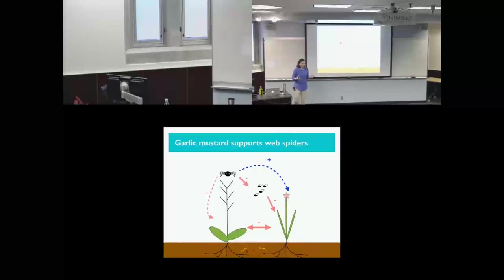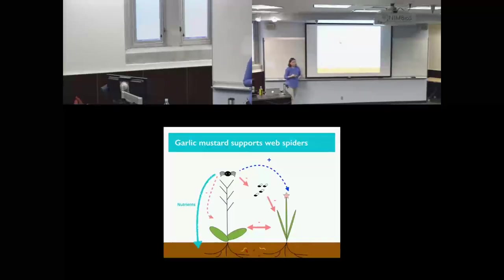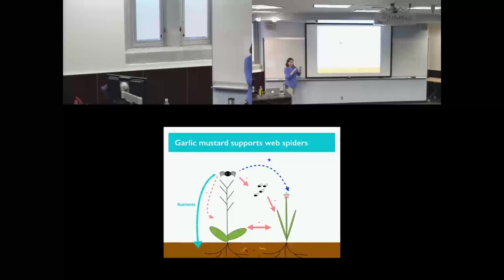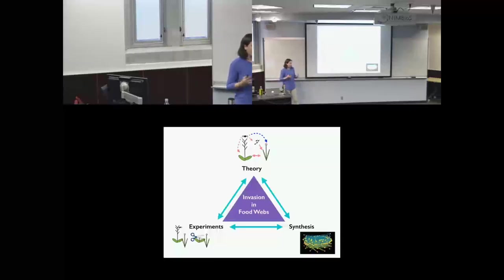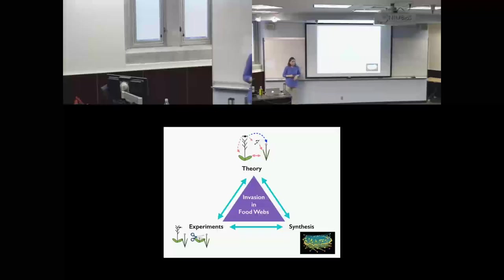We can broaden this to an ecosystem perspective and imagine these spiders at really high densities having an impact on nutrient availability — either by altering the plant community composition or through direct carcass deposition onto the ground. To test these ideas, I took a three-pronged approach: starting with a model to formalize the hypotheses, then doing field experiments to directly test them, and finally a literature synthesis to take a global view of how invaders are interacting with food webs.